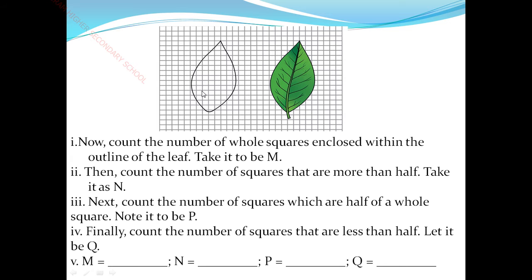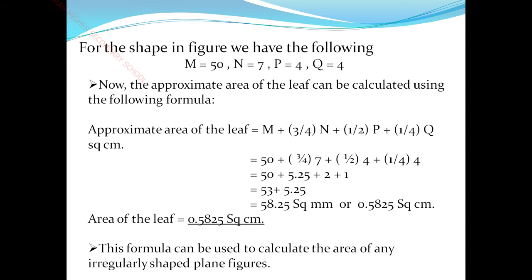Looking at the picture, a whole square is counted as M. Squares that are exactly half are noted as N. Squares that are more than half of a whole square are noted as N, and squares that are less than half — such as three-fourths, one-half, and less than one-half — are noted as P and Q. We have calculated: M equals 15, N equals 7, P equals 4, and Q equals 4.